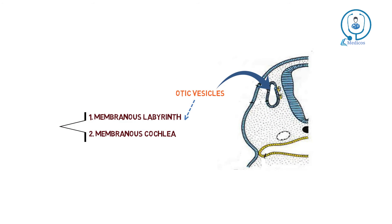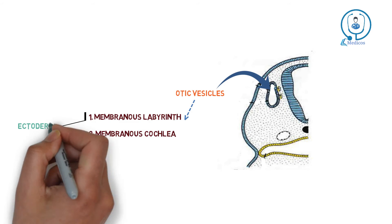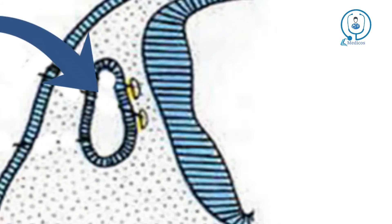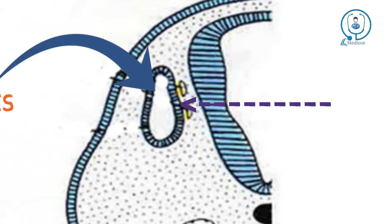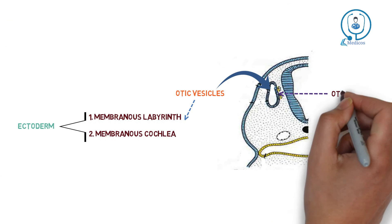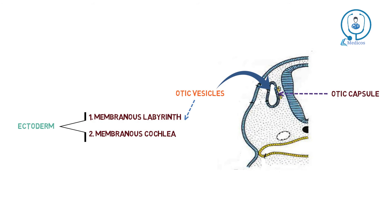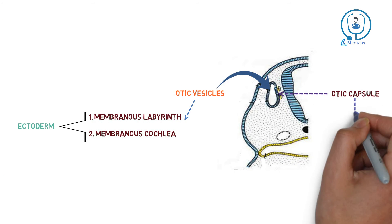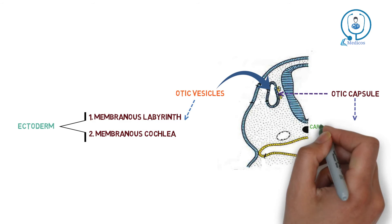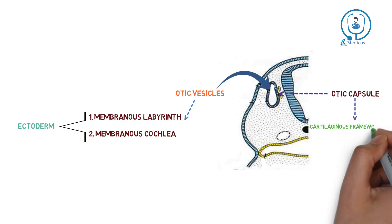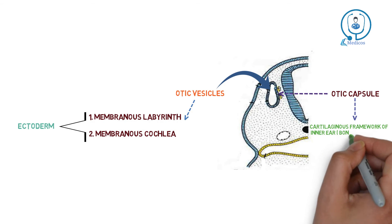This otic vesicle undergoes further differentiation and forms the membranous labyrinth and membranous cochlea, which is derived from ectoderm. The otic vesicle is surrounded by mesoderm, which thickens and forms the otic capsule. The otic capsule differentiates and forms the cartilaginous framework of the inner ear — that is, the bony part of the inner ear.